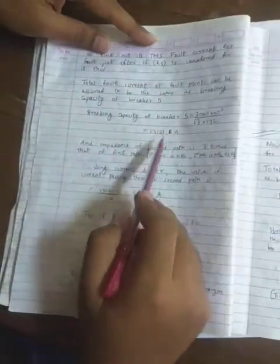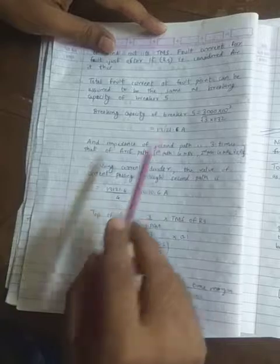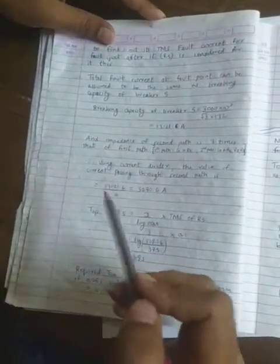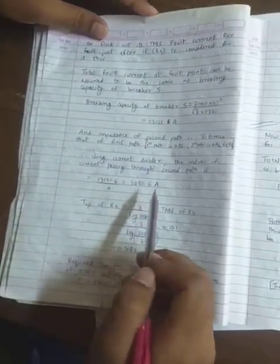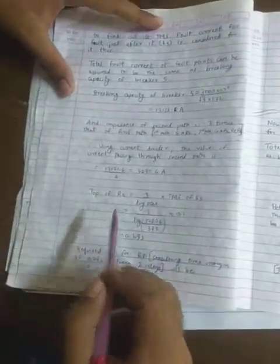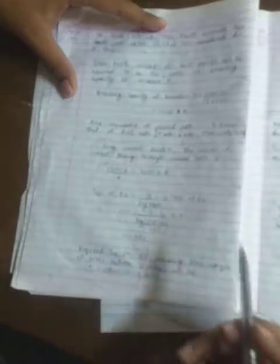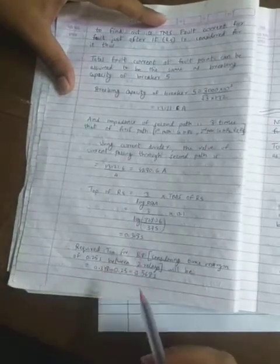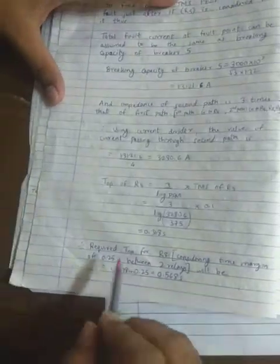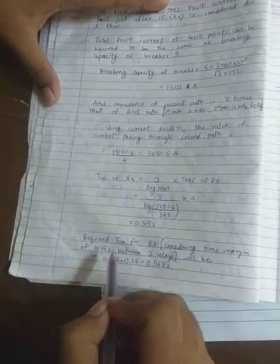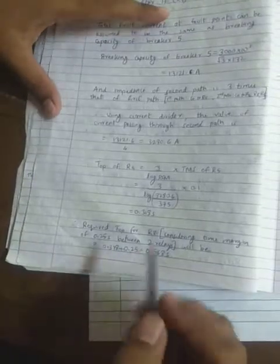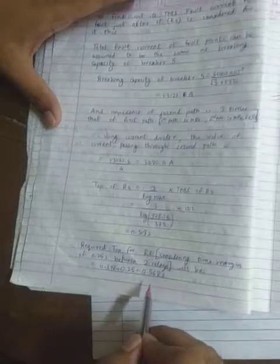So the breaking capacity of circuit breaker phi was 13116 amps. But if we consider the second path, the current would be 13116 by 4, that is 3279 amps. So we can find out the time of operation. The formula is given by 3 upon log PSM into TMS of R5. So this comes out to be 0.318 seconds. Now the time of operation of R5 is found to be this. So now we have to find out for relay number 8. We consider a time margin of 0.25 seconds between the two relays. And thus, we find out that the time of operation for R8 would be 0.568 seconds.